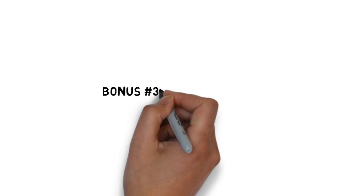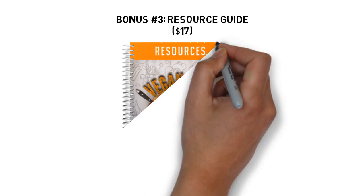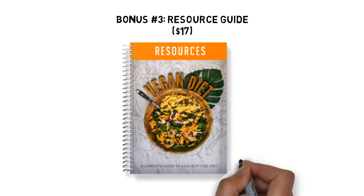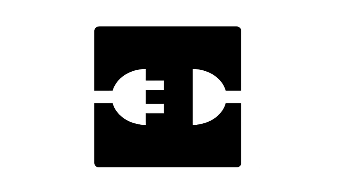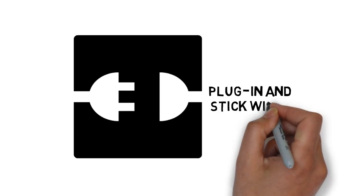Fast action bonus number three, going vegan resource guide, valued at $17. The resource guide gives you a quick point of reference to all of the resources mentioned throughout the guide. This makes it easy to plug in and stick with what you're looking for.